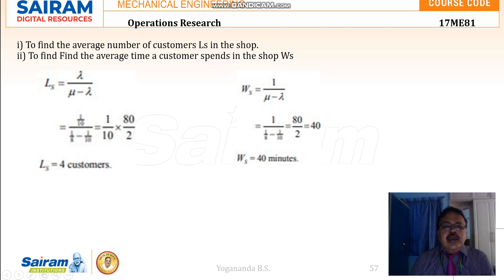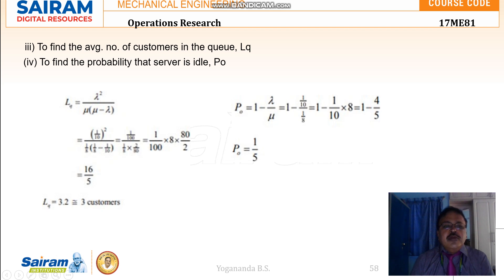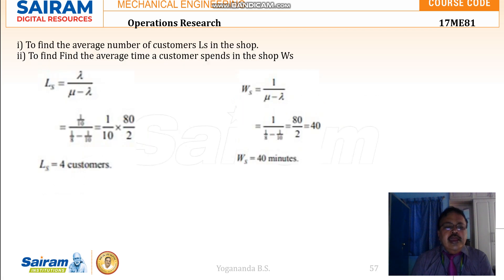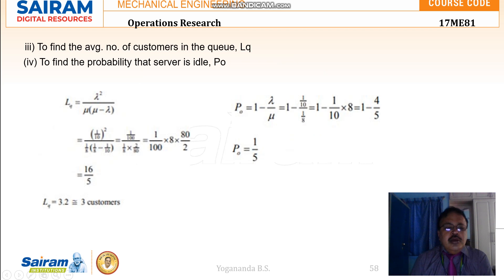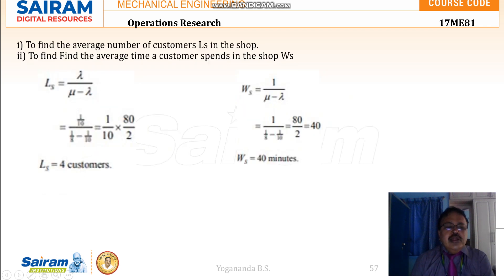That is, totally the customer has to wait for 40 minutes including the time spent in the queue as well as at the service counter. The average number of customers in the queue, that is LQ, is lambda squared divided by mu into mu minus lambda. We are getting roughly 3.2, round off to three customers. So in the queue three customers and in the system four customers — meaning three customers waiting in the queue and one customer at the service counter, giving totally four customers in the shop at any point of time.